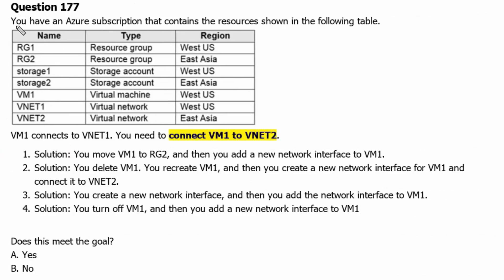Question 177. You have an Azure subscription that contains the following resources: RG1 is a resource group in West US, RG2 is a resource group in East Asia, Storage1 is a storage account in West US, Storage2 is a storage account in East Asia, VM1 is a virtual machine in West US, VNet1 is a virtual network in West US, and VNet2 is a virtual network in East Asia. VM1 connects to VNet1. You need to connect VM1 to VNet2.